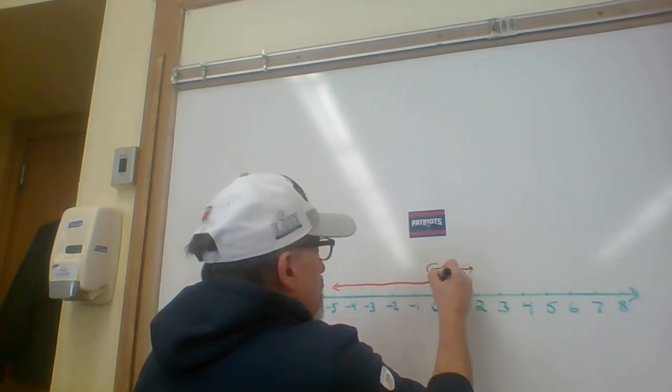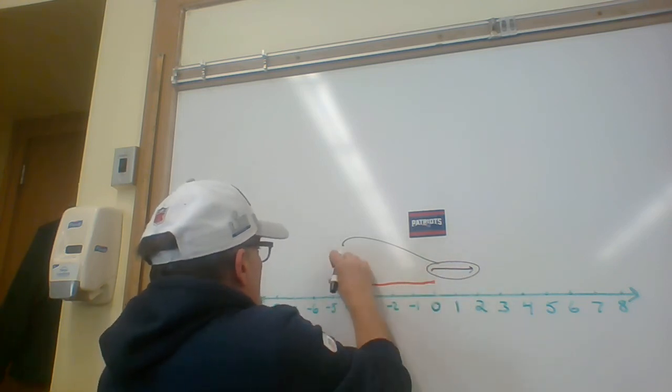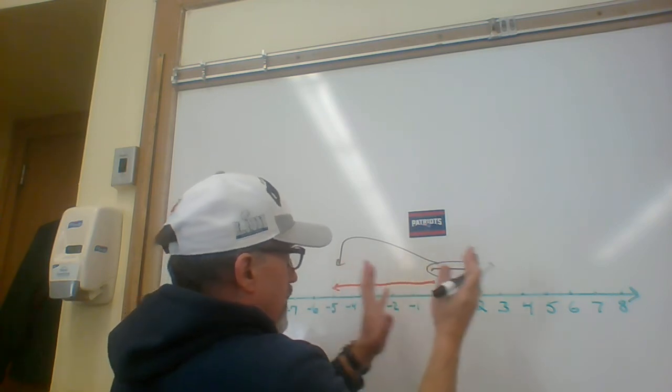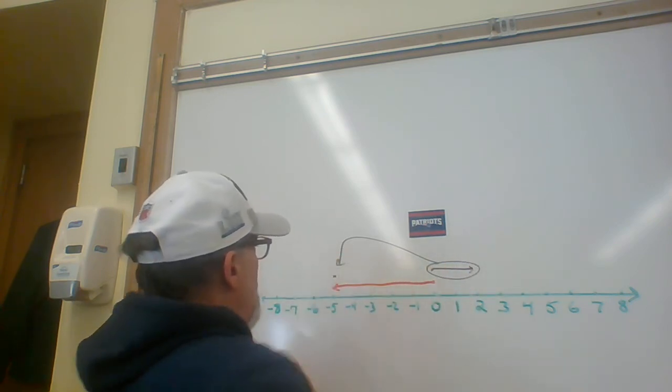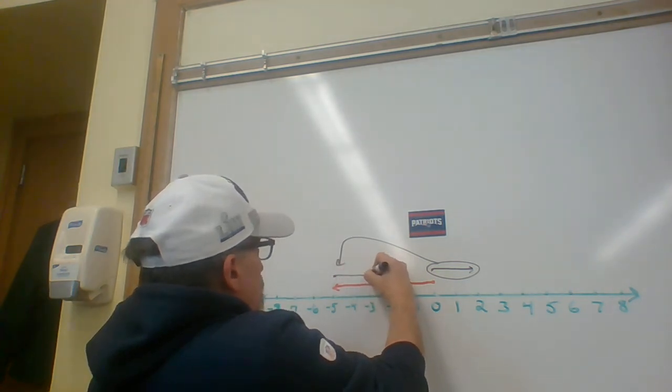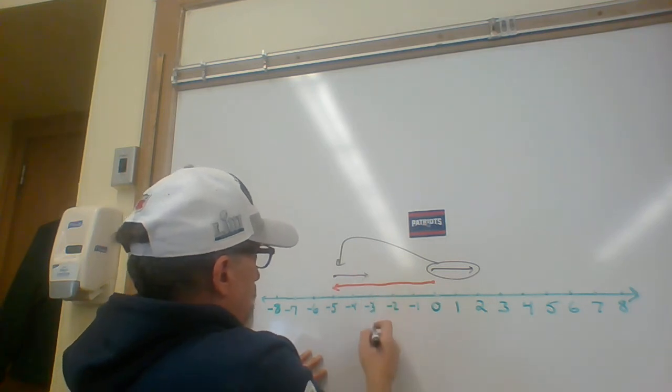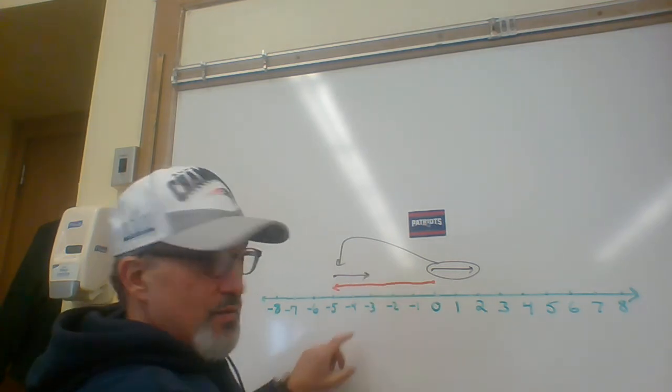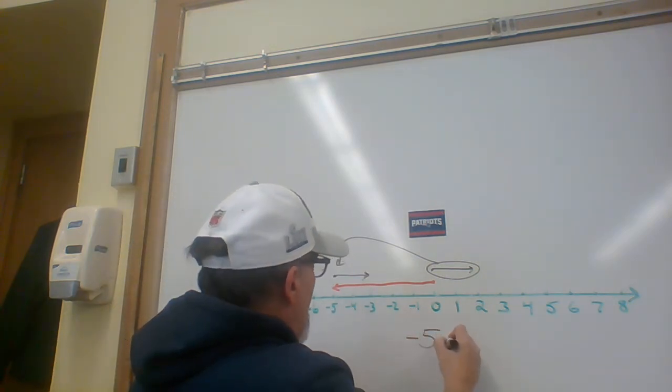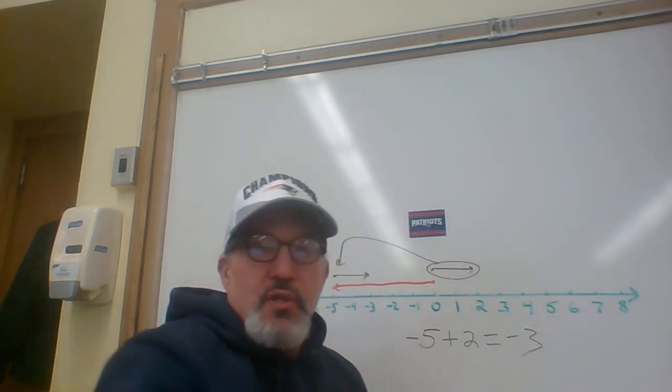Take its end point. Put it right here on top of the beginning point of the two and put it on top of the end point of the negative five. It extends back here by two units to the right just like it did here. And of course now the new endpoint of that vector is at negative three. What we just showed is negative five plus two equals negative three.